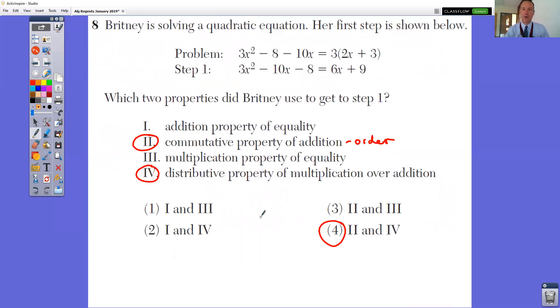In question number eight, Brittany is solving a quadratic equation. Her first step is shown below. So when I take a look at what she's doing from the problem to step number one, I can see that she switched around the order and she also distributed. So that would be answer number two and answer number four, which is choice number four, because it says which two properties did she use?